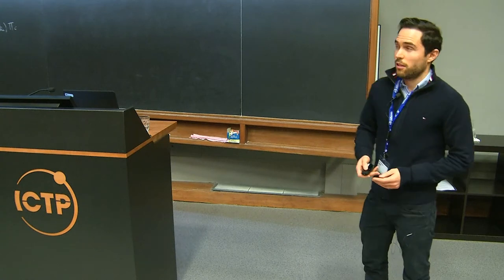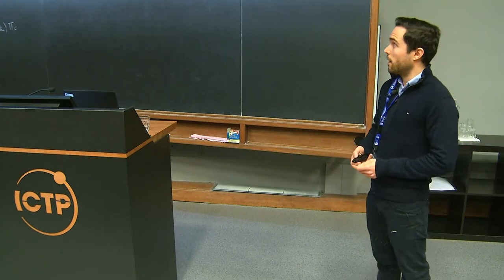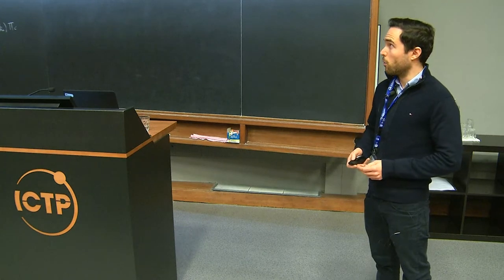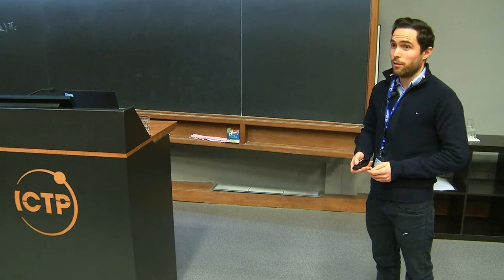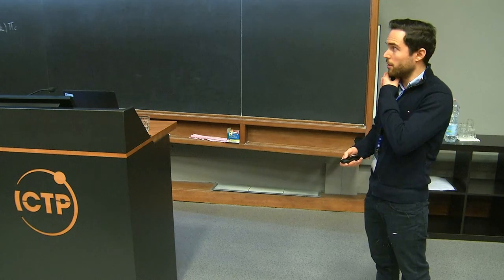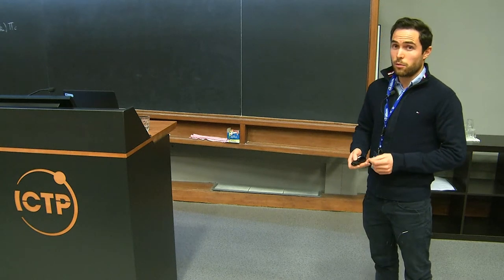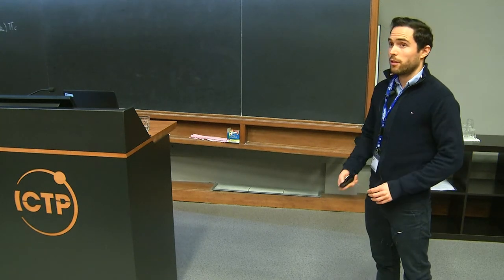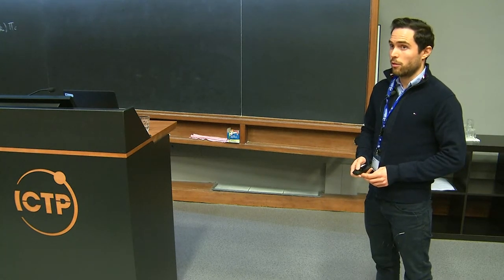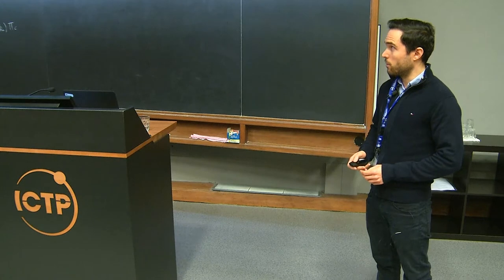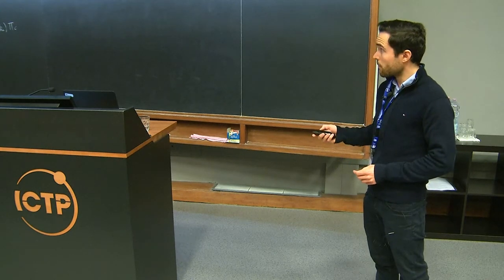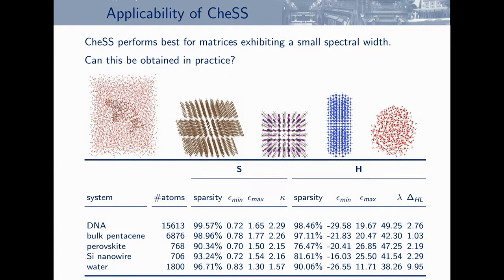Sparse matrices are actually quite abundant. You will find them if you have a specific basis set that incorporates localization, or if you have intrinsic localization properties of your matrices. To deal with this, we created a standalone library for sparse linear algebra, tailored for electronic structure codes. We called it CHESS, which stands for Chebyshev Sparse Solvers. CHESS works very well if your matrices exhibit a very small spectral width — it is really tailored for this purpose.